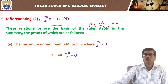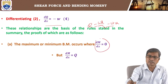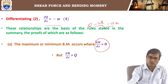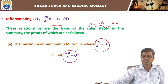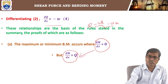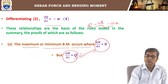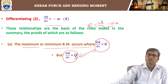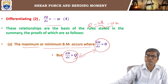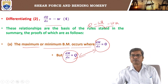Since M is a function of x, for maximum or minimum bending moment the condition to be satisfied is dM by dx equal to zero. But we have the relation dM by dx equals shear force Q. So for maximum or minimum bending moment at any section, the shear force must be zero at that section. In other words, where the shear force is zero, the bending moment will be either maximum or minimum.